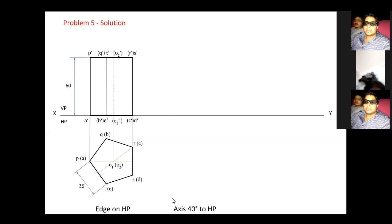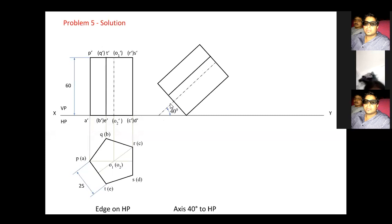In the second phase, the axis is inclined at 40 degrees to HP. I draw an axis and convert this axis inclination to a base inclination: 90 minus 40 gives 50 degrees. So I draw a 50-degree line, then measure from C dash to B dash, then C dash to A dash, and cut down. I draw a 90-degree line — these lengths are 60mm — and close the rectangle.